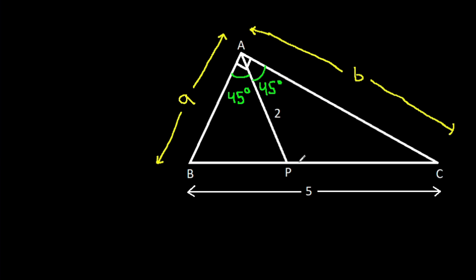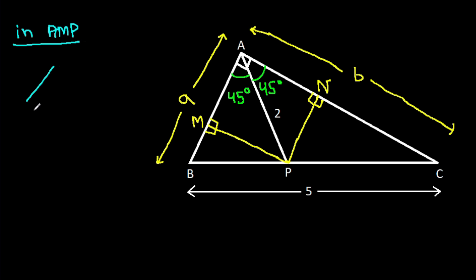From point P, we draw a perpendicular to AB — suppose this point is M — and a perpendicular to AC — suppose this point is N. In triangle AMP, one angle is 90 degrees and angle BAP is 45 degrees, so the remaining angle is also 45 degrees. That means AM equals PM.